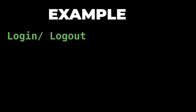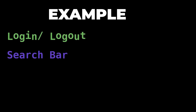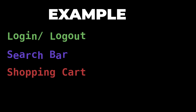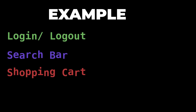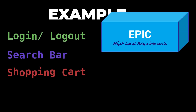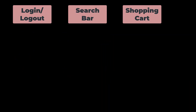Let's say we have a roadmap to build a login/logout feature first, followed by creating a search bar for searching products from the site, and finally build a shopping cart page. Now, the login/logout feature, search bar feature, and shopping cart feature can become the epics here.